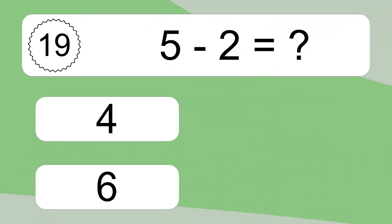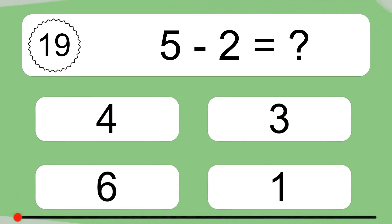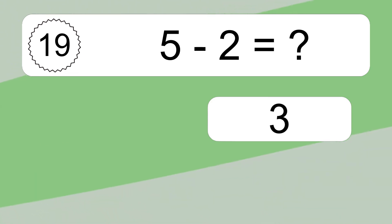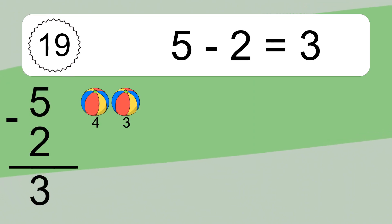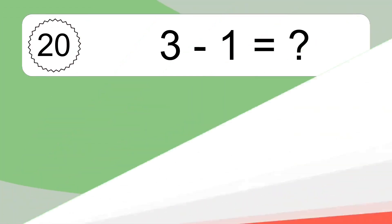5 minus 2 equals what? 5 minus 2 equals 3. Let's count it: 4, 3.